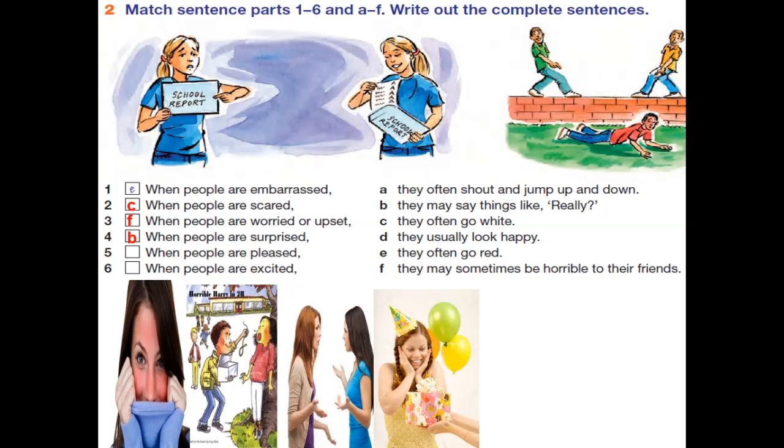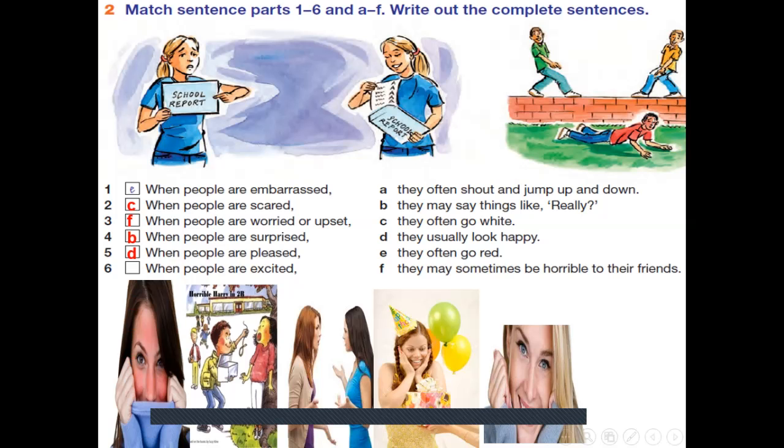Four. When people are surprised, when they are surprised, they may say things, really. Like, really. Okay. It's with B. When people are pleased, this is usually things that always happen. When people are pleased, what happens to them when they are pleased? Okay. When they are pleased, they feel happy. They usually look happy. Okay. So it's with D. The last one. When people are excited, it's with A. They often shout and jump up and down.